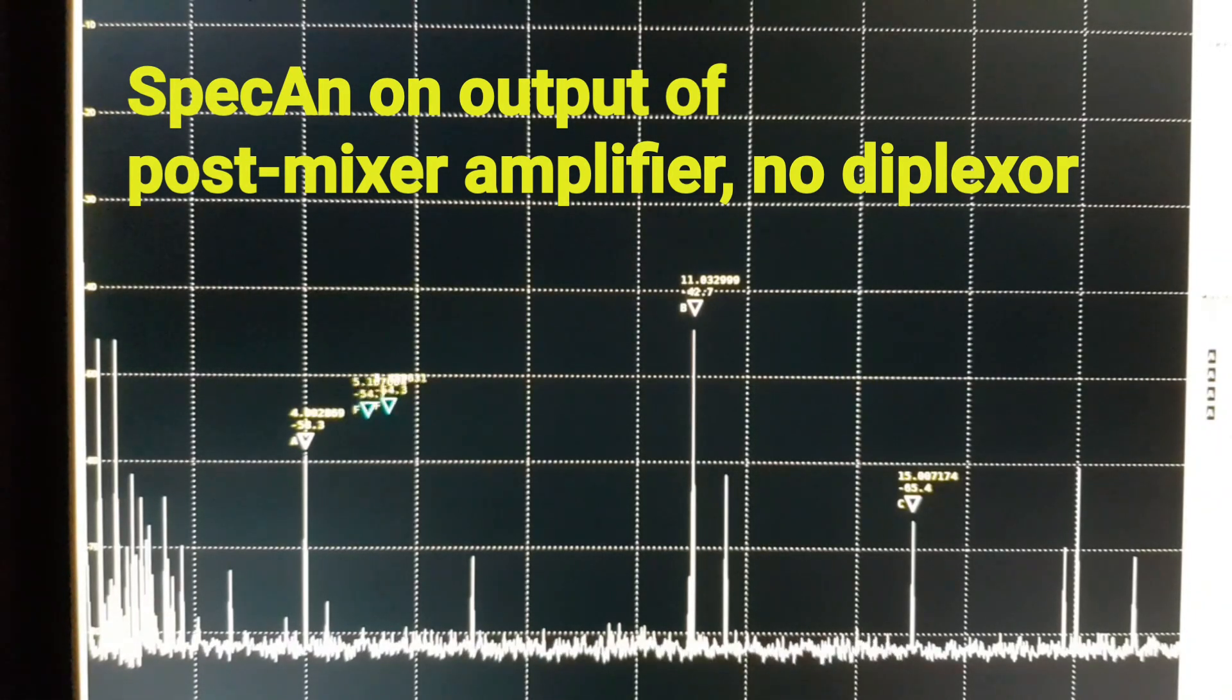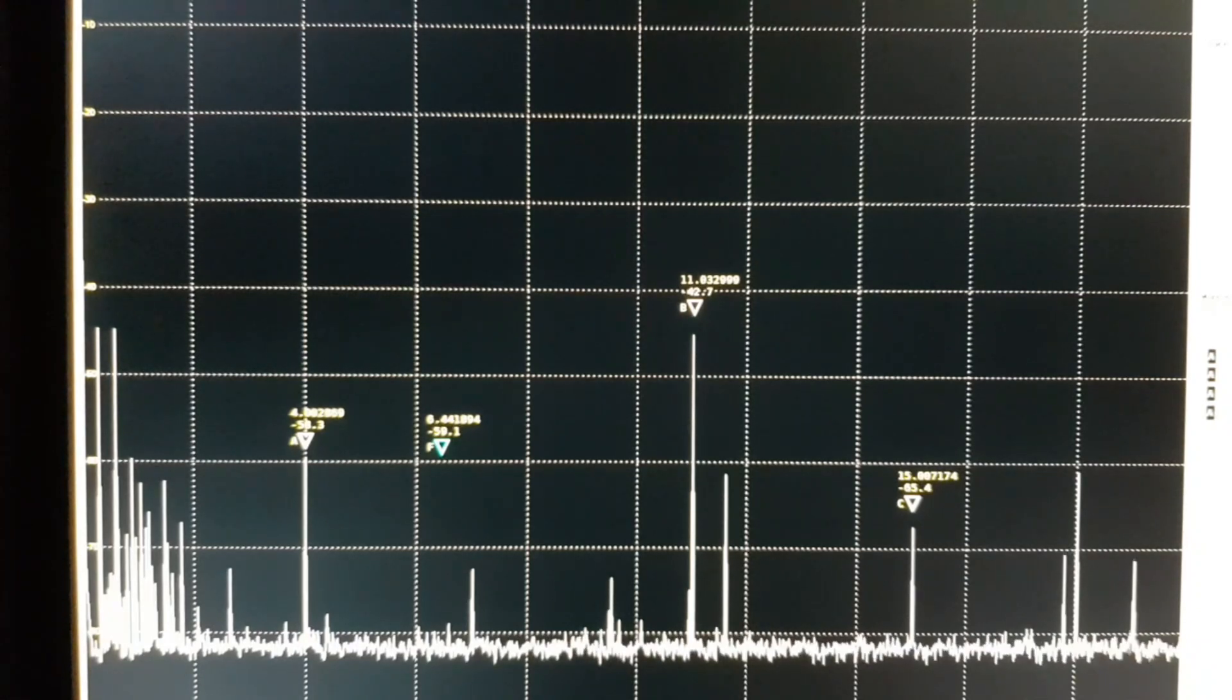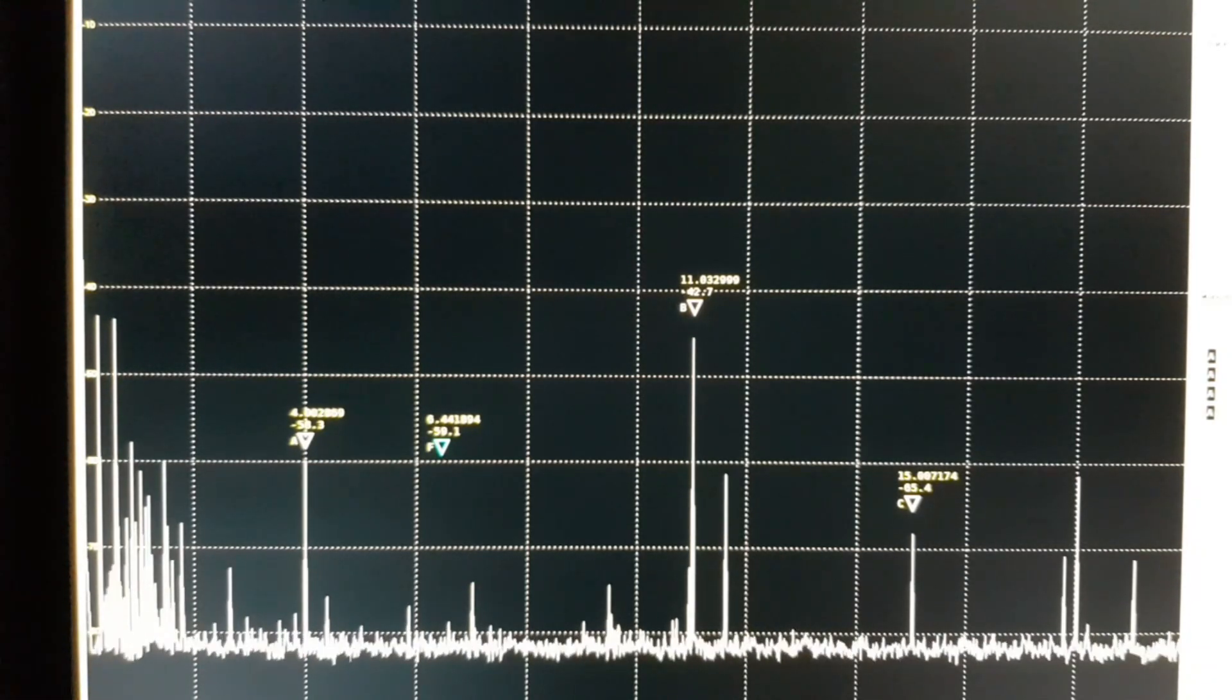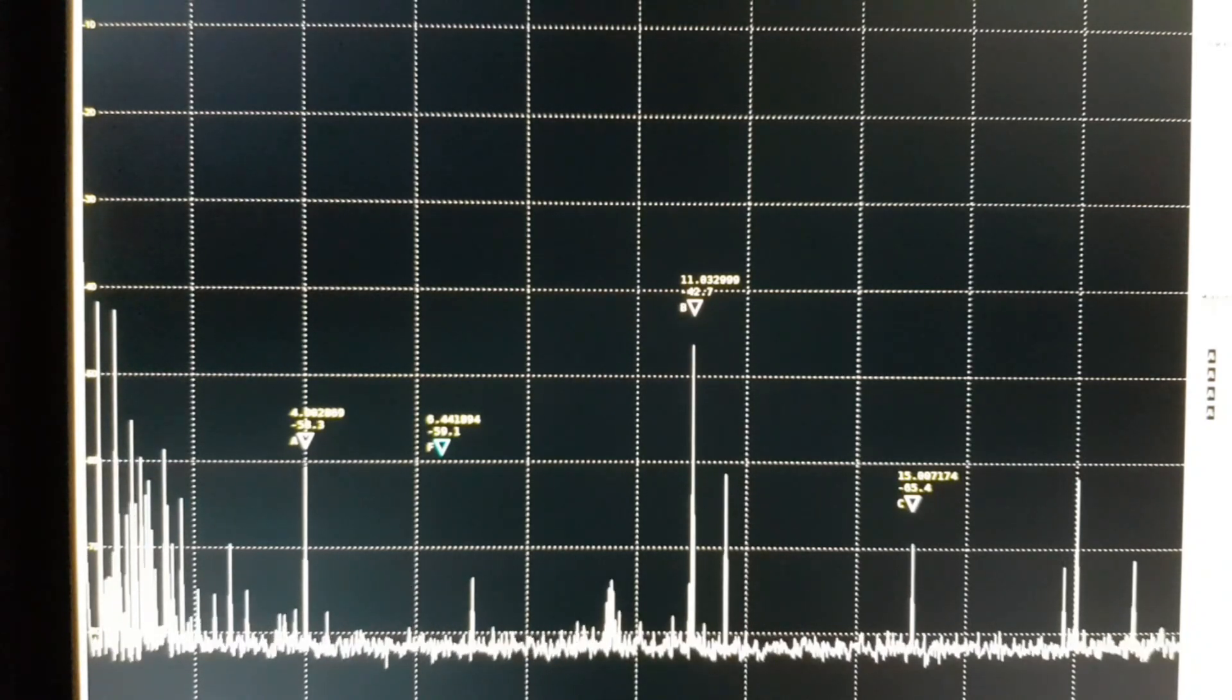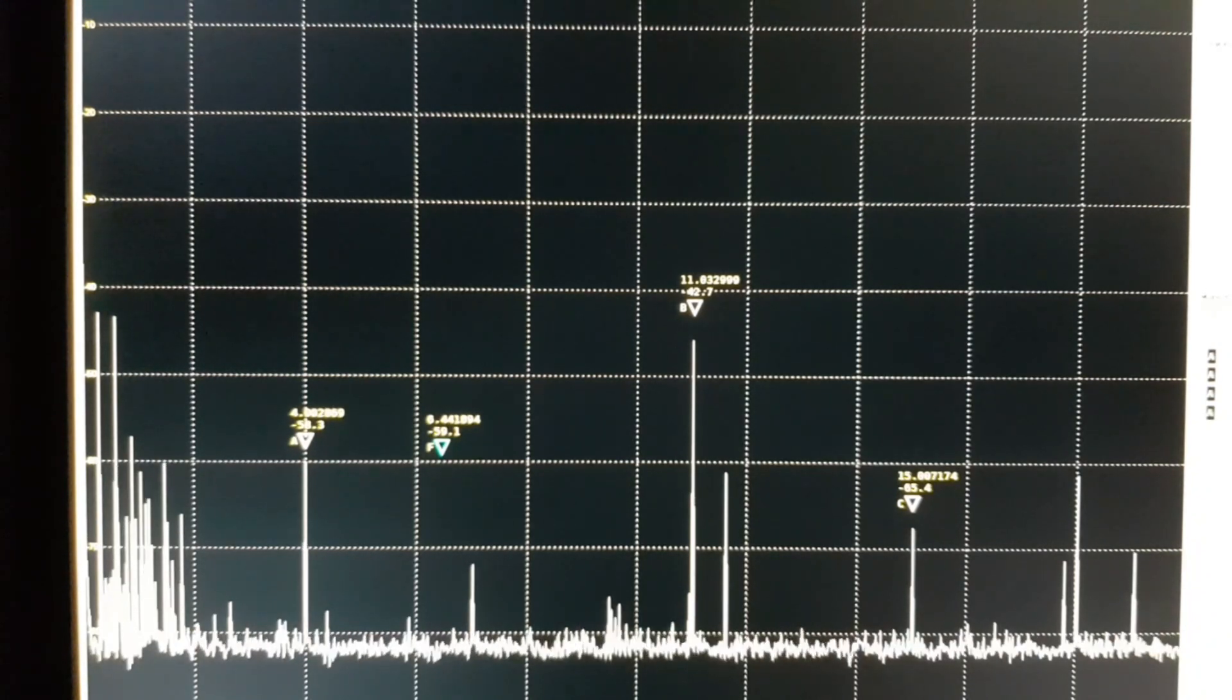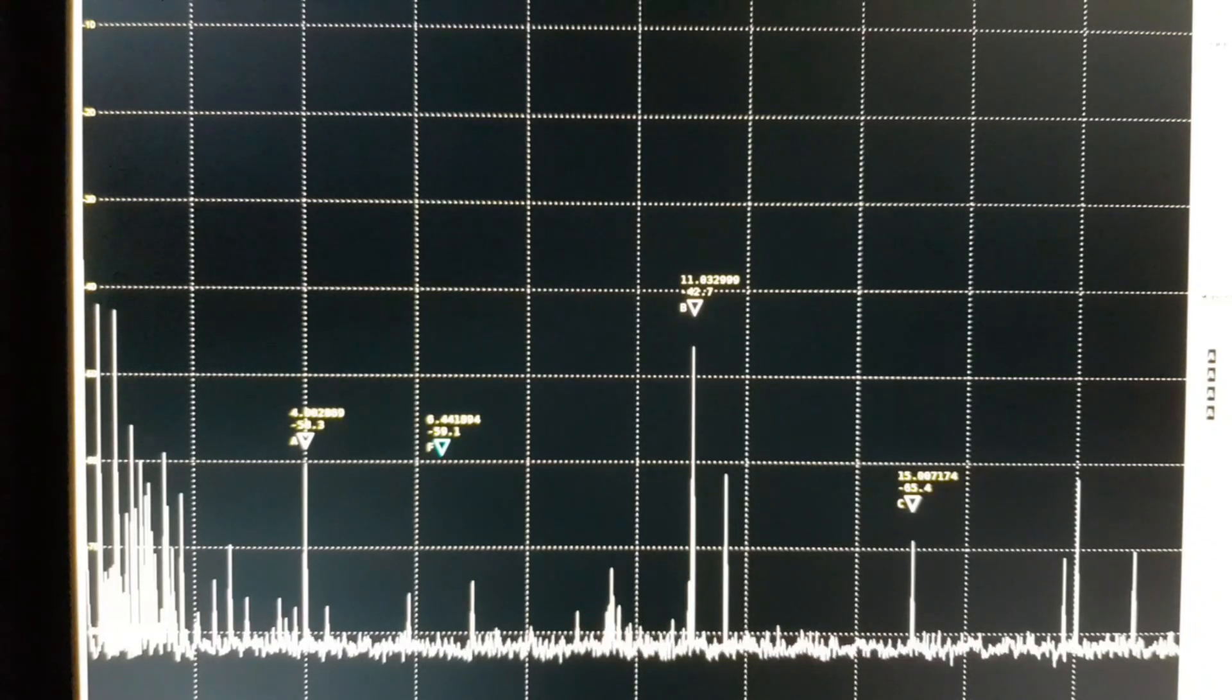Let's have a look at the output of the post mixer amplifier. And we've got three points marked here. So in this test the receiver, which has a 4 MHz IF, is on the lower end of 40 meters, so 7020 kHz. I'm also running a signal generator that is putting a signal right on 7020.